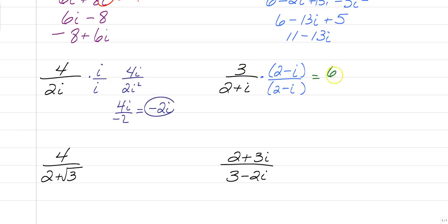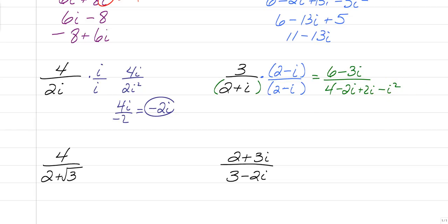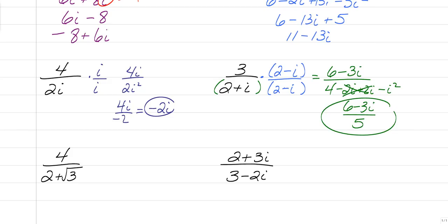On the top, you just distribute: 3 times 2 is 6, minus 3 times i is 3i. On the bottom, 2 times 2 is 4, 2 times negative i is negative 2i, and 2 times positive i is positive 2i, and i times negative i is negative i squared. The middle terms cancel — that's why we use the conjugate. Negative i squared is plus 1, so that gives us 6 minus 3i over 4 plus 1, which is 5. That's how you work with a complex conjugate.